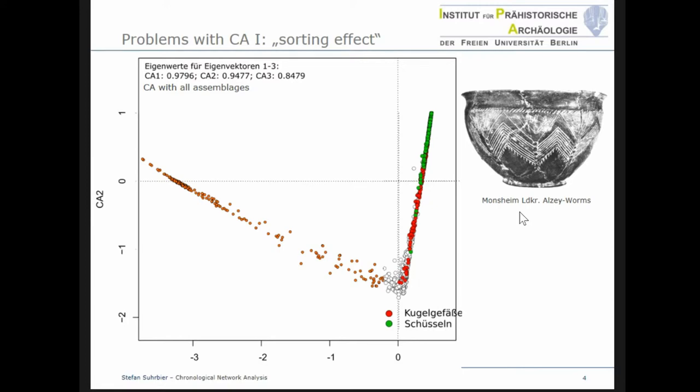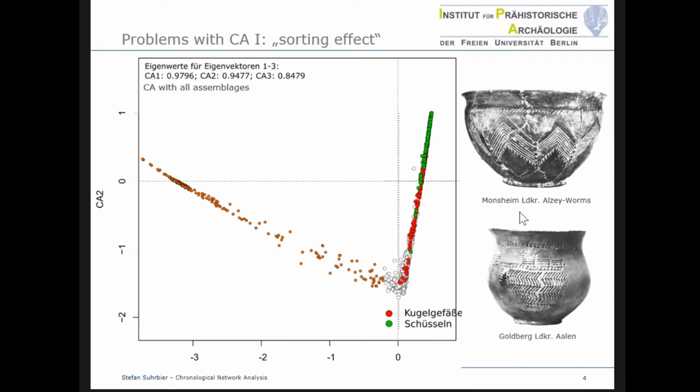In earlier publications, Spatz and other colleagues tried to solve this problem by separation of the whole material. In the first step they analyzed the earlier Middle Neolithic sherds, in the second step the resin bowls, and in the third step the Kugelgefäße. Subsequently, the results were combined on the basis of typological arguments. When I started my chronological analysis, I also used this approach.